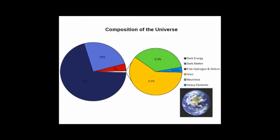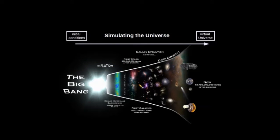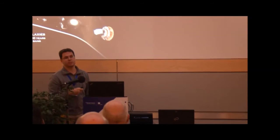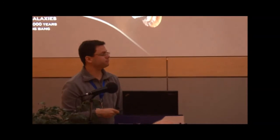We have pretty good evidence for this composition and we know the initial conditions. So you can ask: if we know the initial conditions and the laws of nature, there should be some way to go from those initial conditions to a virtual universe which looks like our real universe. The initial conditions are given by the cosmic microwave background. We know the composition — dark matter, dark energy, and atoms — and we know general relativity from Einstein and many other theories. So we should be able to evolve this forward in time to get a universe that looks like ours. That's the main challenge we try to face.